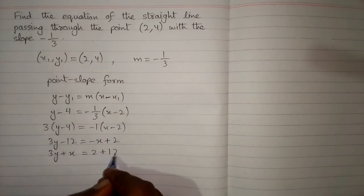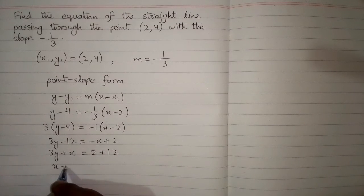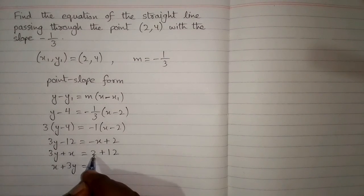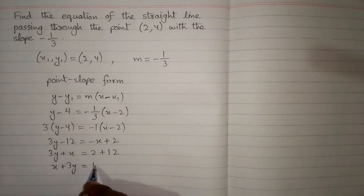So it will become plus 12 and this can be written as x plus 3y is equal to 12 plus 2 which is 14.